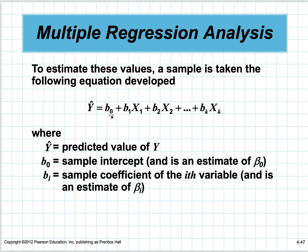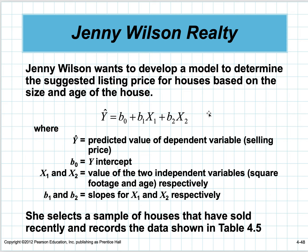We're trying to estimate the betas with sample statistics b1 through bk. y-hat is the predicted value, b sub zero is the intercept, x1 and x2 are the two independent variables, and b1 and b2 are the slopes for x1 and x2 independently.